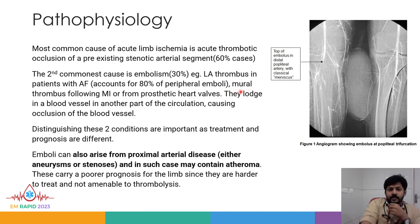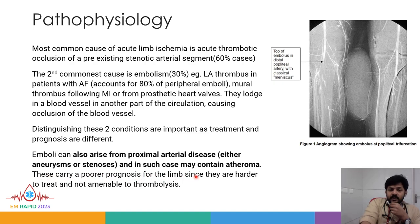Other causes for embolism include a mural thrombus following an MI or from prosthetic heart valves. These emboli lodge in a blood vessel causing occlusion. Distinguishing thrombosis from embolism is important as treatment and prognosis are completely different. Emboli can also arise from proximal arterial disease — either aneurysms or stenosis — and if the embolus contains atheroma, it carries a very poor prognosis since it is harder to treat and not amenable to thrombolysis.